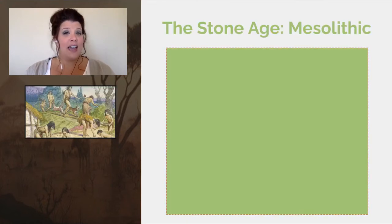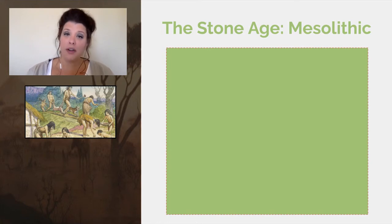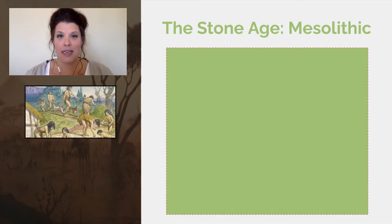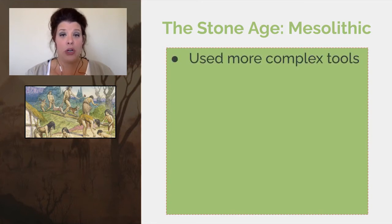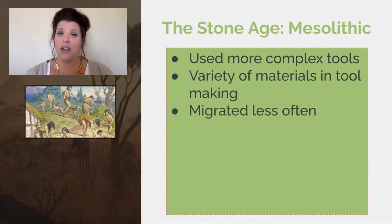After the end of the Ice Age we have the Mesolithic era — still part of the Stone Age but the middle piece. During the Middle Stone Age people used more complex tools and were able to use more materials to make them, so it wasn't just about stone anymore — it was also about using wood, bone, and antlers.